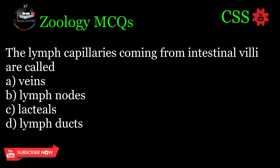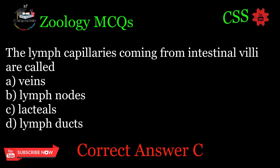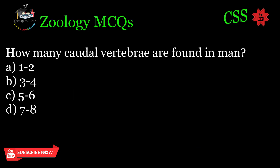The lymph capillaries coming from intestinal villi are called: A. Veins, B. Lymph nodes, C. Lacteals, D. Lymph ducts. Correct answer: C.